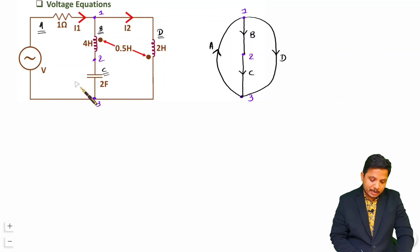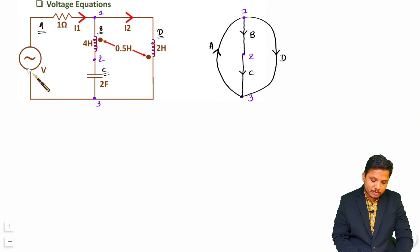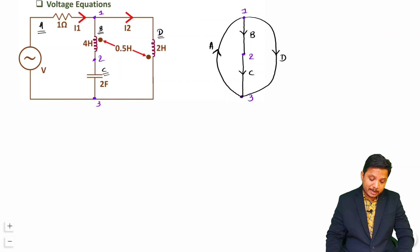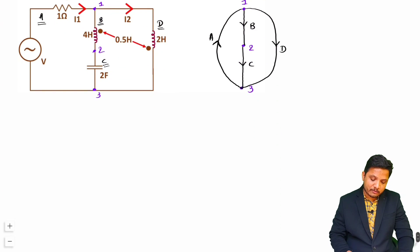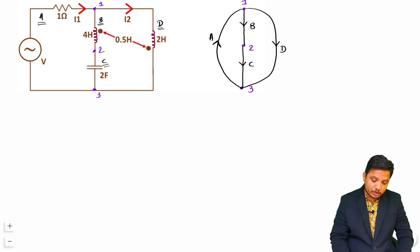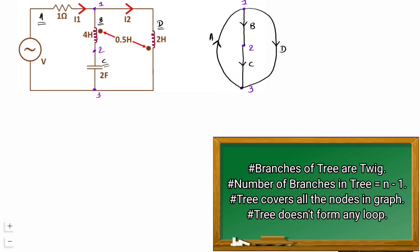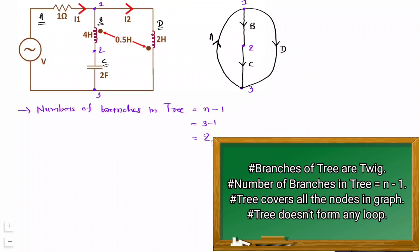Just note that the voltage source is considered as short circuit. This is the graph of the given circuit. Now, the second question is to draw one tree. You should know the basic definition of a tree and how to form one. The number of branches in a tree equals total number of nodes minus 1. Here we have 3 nodes, so 3 minus 1 means 2 branches will be there for the tree of this graph.